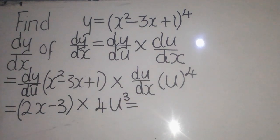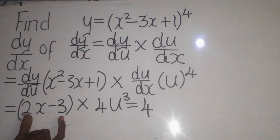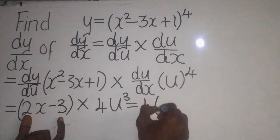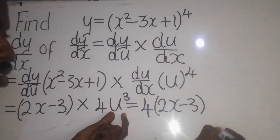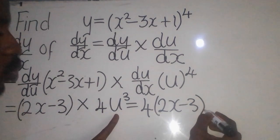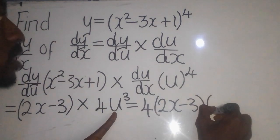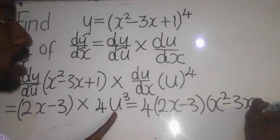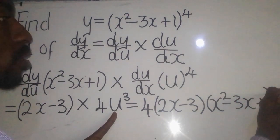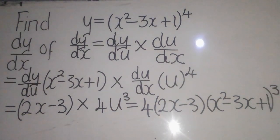Now from there you conclude. So 4 multiplied by the invisible 1 in front gives 4. Then you write the differentiated inner function, which is 2x minus 3. Remember there is u remaining — where there is u, we need to substitute back the actual function. So you open brackets and write x squared minus 3x plus 1, raised to the power 3. Then you are done.